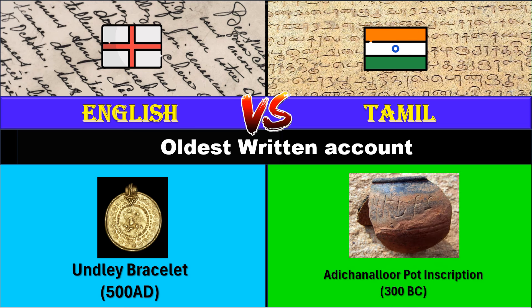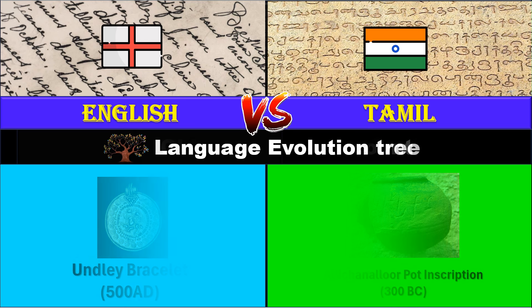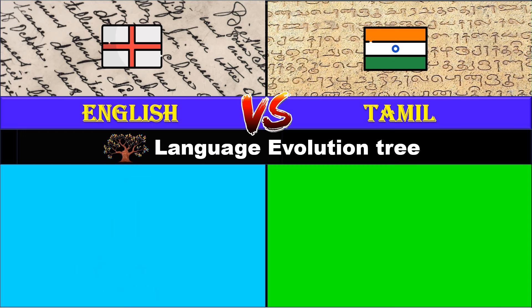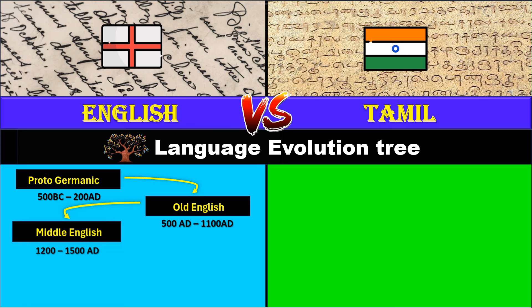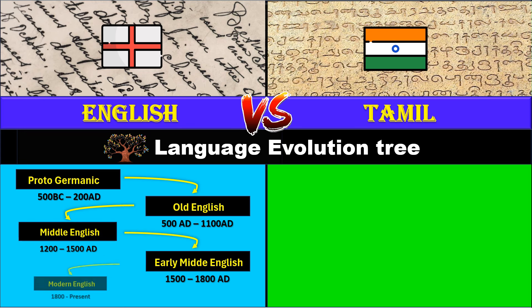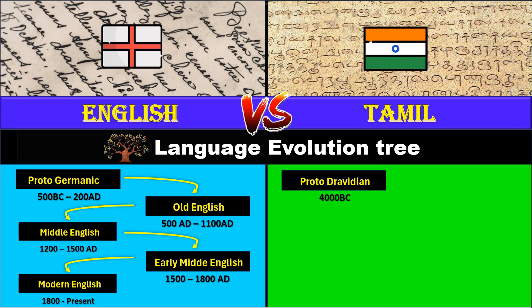Language evolution tree: English descended from Proto-Germanic into Old English around 500 AD, then into Middle English in the 1200s, and then Early Modern and Modern English in the 1800s. Tamil descended from Proto-Dravidian into Old Tamil around 300 BC, then into Middle Tamil in the 8th century and Modern Tamil in 1500 AD.